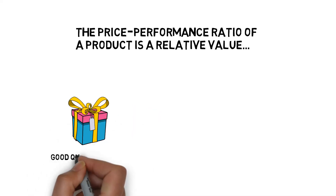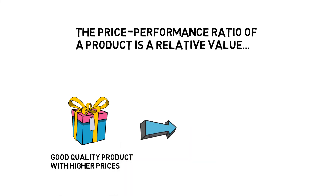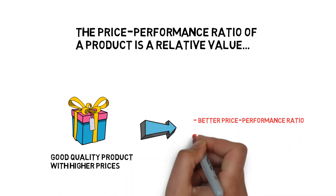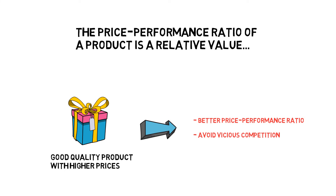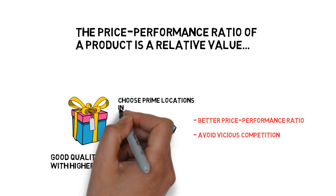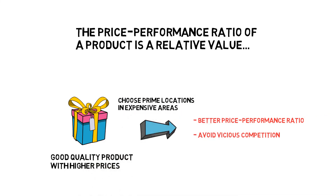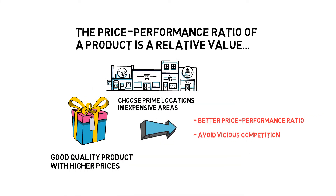If you are selling products which have good quality and higher prices, to increase the price-performance ratio and avoid vicious competition from cheap low-quality items, the best locations to choose are prime locations in expensive areas. People will be willing to pay a little more to get a high-quality item because those items will have the best price-performance ratio in that area. The key point is to ensure that the product you are selling has good quality, so that customers will feel they get what they pay for.